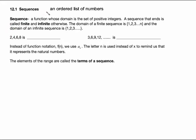Basically, a sequence is just an ordered list of numbers. Something like 2, 4, 6, 8 is an ordered list of numbers. The formal definition says a function whose domain is a set of positive integers. Two definitions here: if the sequence ends, it is called finite. If the sequence has dot dot dot on the end, it is infinite because that means it continues forever and ever.